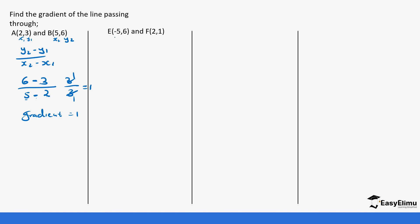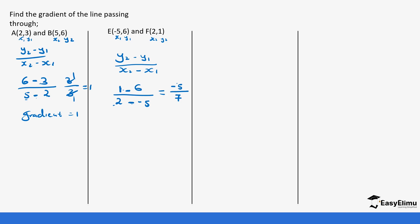Now find the gradient of a line through (-5, 6) and (2, 1). We assign x1 = -5, y1 = 6, x2 = 2, y2 = 1. So it's y2 minus y1 over x2 minus x1: 1 minus 6 over 2 minus (-5), giving -5 over 7. Do not be surprised if you get a negative fraction — it is possible, and we leave the answer as -5/7.